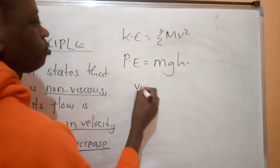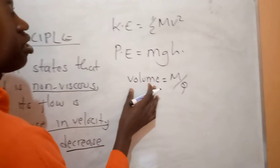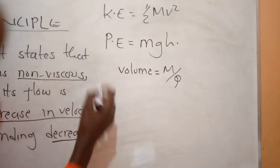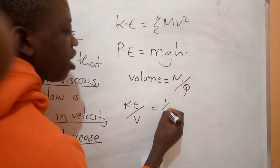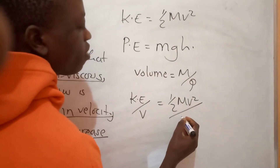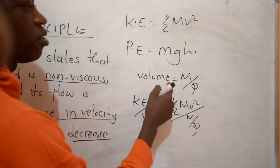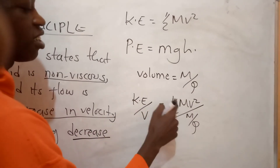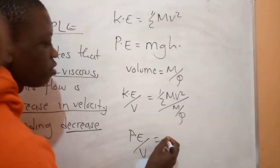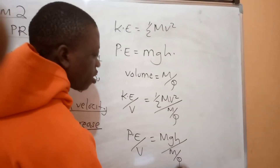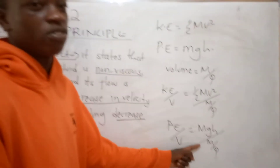To calculate volume from measurement, volume is given by mass over density. So if I need kinetic energy over volume, this means I have one-half mv squared divided by volume, and our volume here is m over rho. For potential energy divided by volume, this will be mgh divided by m over rho. I want to simplify these equations to get kinetic energy per unit volume and potential energy per unit volume.